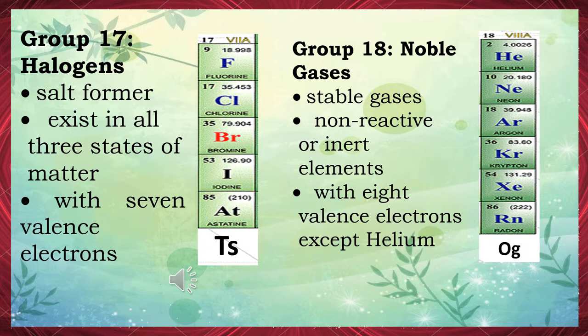Group 18 — Noble gases: stable, non-reactive or inert elements with eight valence electrons, except helium. Members: helium, neon, krypton, xenon, and radon.